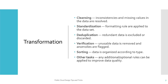Second is transformation. When we say transformation, that means you will take your raw data and perform data cleansing — removing inconsistencies and missing values. Then standardization, meaning formatting rules are applied to the dataset. Then deduplication, meaning redundant data is excluded or discarded. Verification means unusual data is removed and anomalies are flagged. Sorting means data is organized according to type. And other tasks like any additional or optional rules or enrichment can also be applied. That means you are transforming your raw data to a standard format.